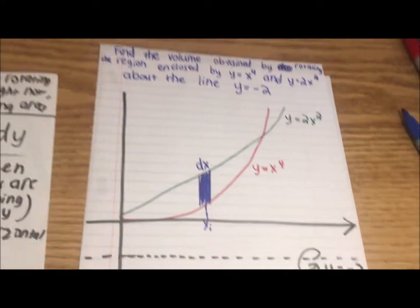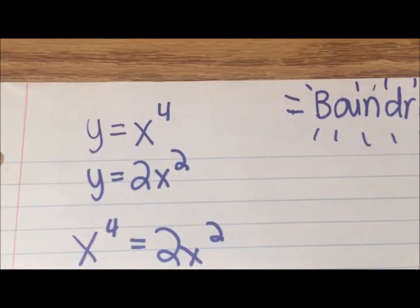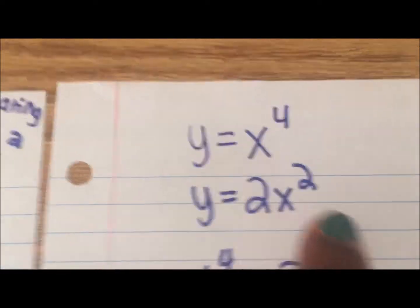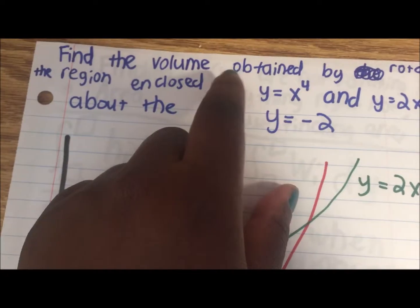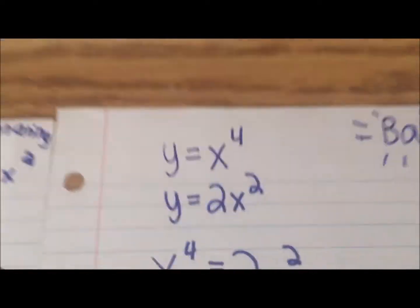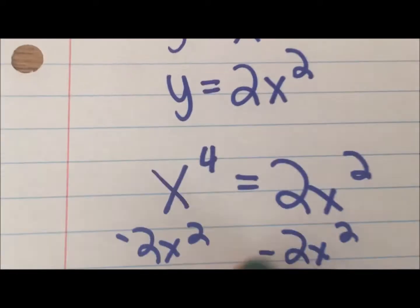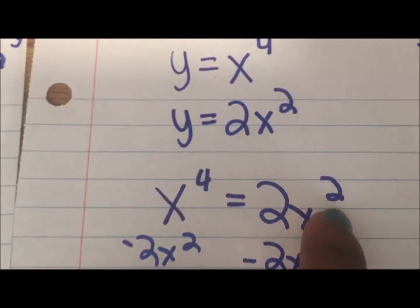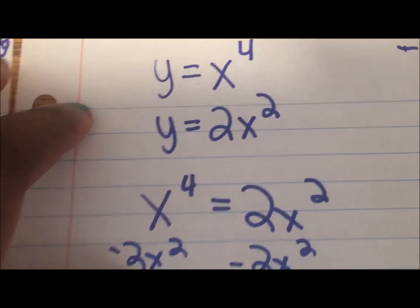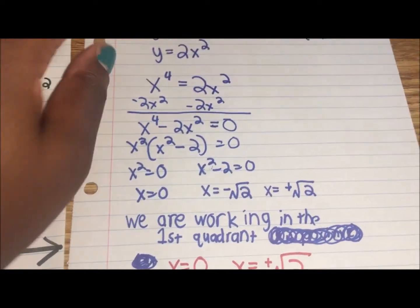Now we can do step 1, which is solve for the boundaries. We have y equals x to the 4th and y equals 2x squared from the problem. Since we have both equations, we can set them equal to each other: x to the 4th equals 2x squared. Then we can solve for x, and when you do all the algebraic steps to solve for x, basically it looks like this.